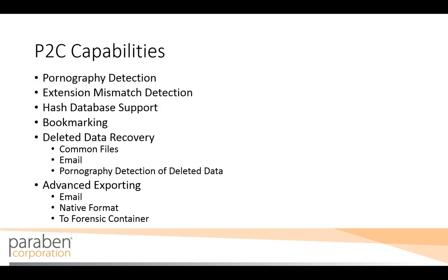P2C has a comprehensive pornography detection feature built into the sorting mechanism. By utilizing 11 different algorithms for things such as flesh tones, background elimination, face detection, body part detection, and more, you can scan images for pornographic content with great accuracy. As P2C sorts and indexes data, it detects whether file extensions match the file header and easily identifies mismatches for users. P2C supports hash databases and includes the latest NIST known file database, so you can filter out common hashes or flag your data.